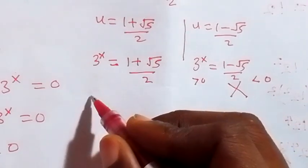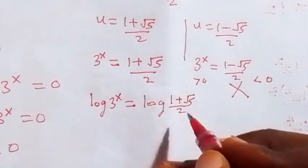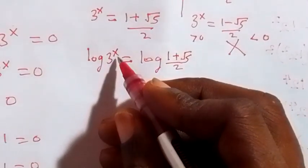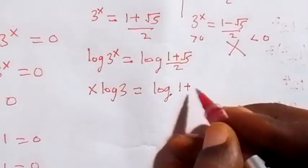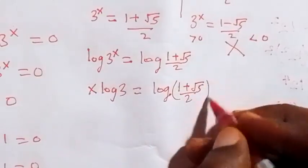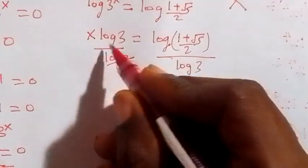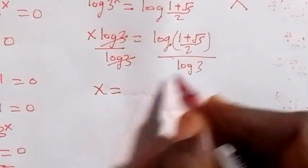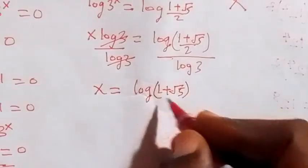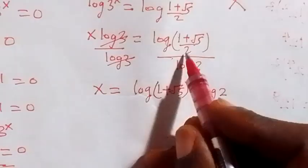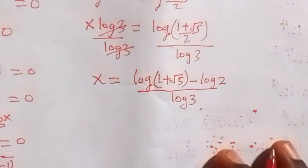On the first side, let's take the log on both sides: log of 3 raised to power x equals log of (1 plus root 5) over 2. From the power law of logarithms, the power x comes to the front, giving x times log 3 equals log of (1 plus root 5) over 2. Dividing both sides by log 3 — log 3 cancels — we get x equals log(1 plus root 5) minus log 2, all over log 3.